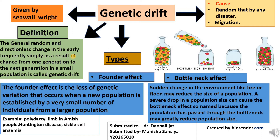The bottleneck effect occurs when there is a disaster that reduces a population. It is an evolutionary event in which a very large percentage of a population is killed. This may occur due to environmental disasters like fire, flood, earthquake, hunting of species, habitat destruction, or disease.